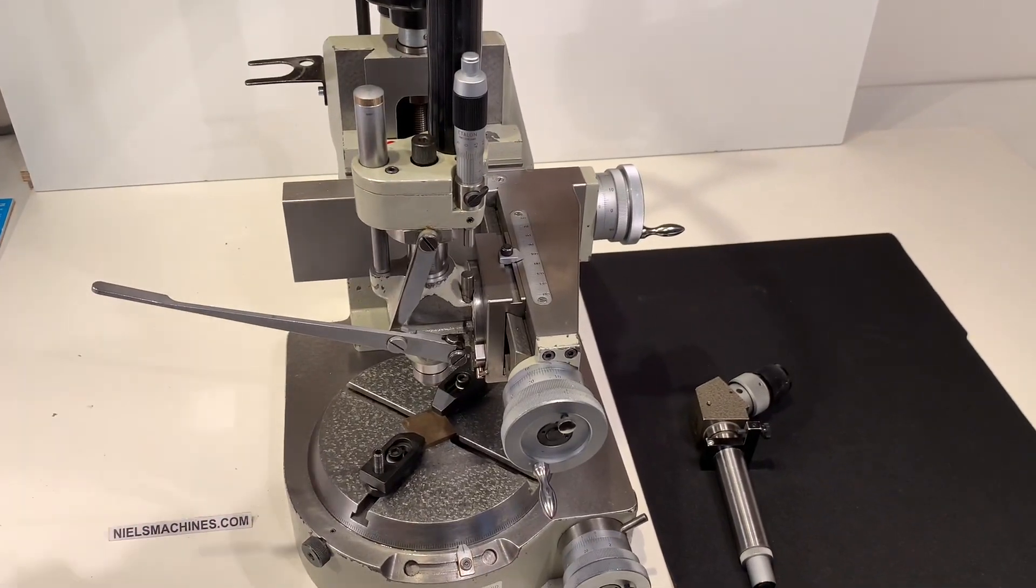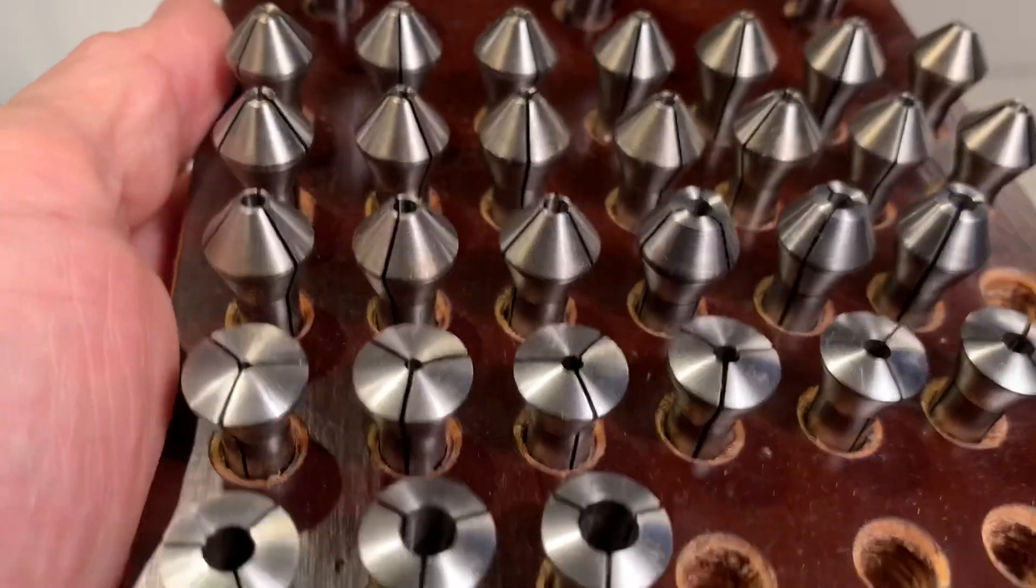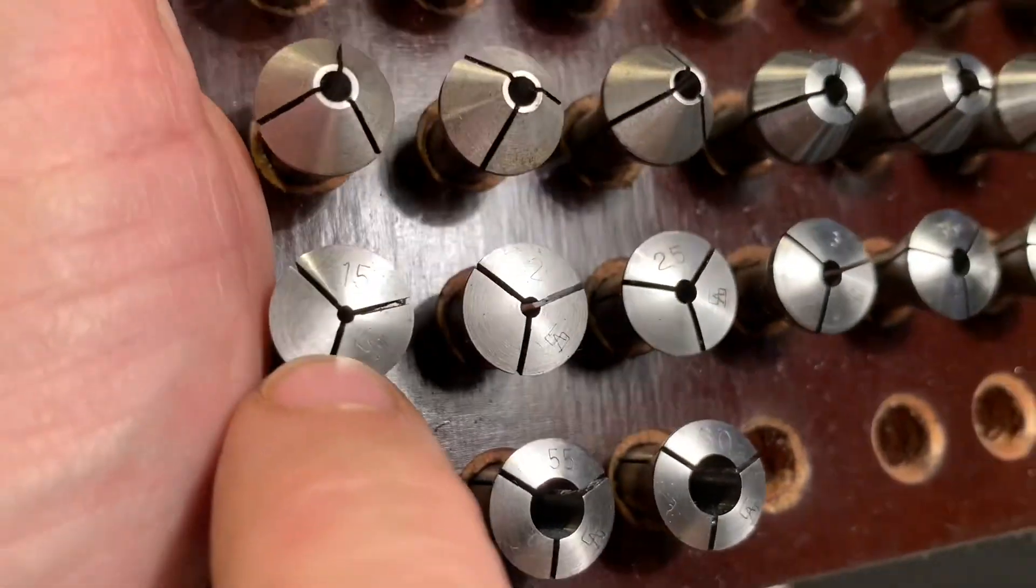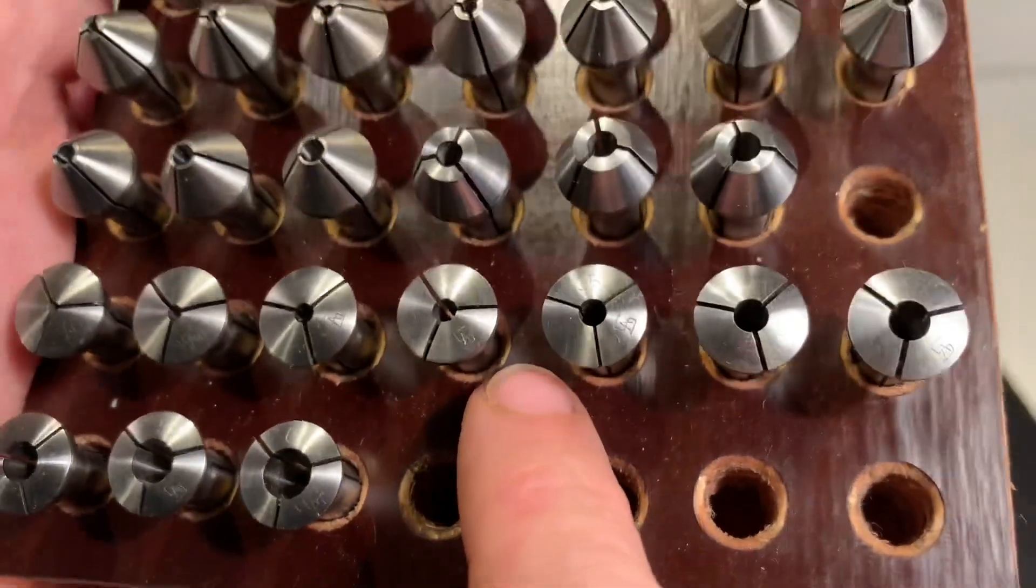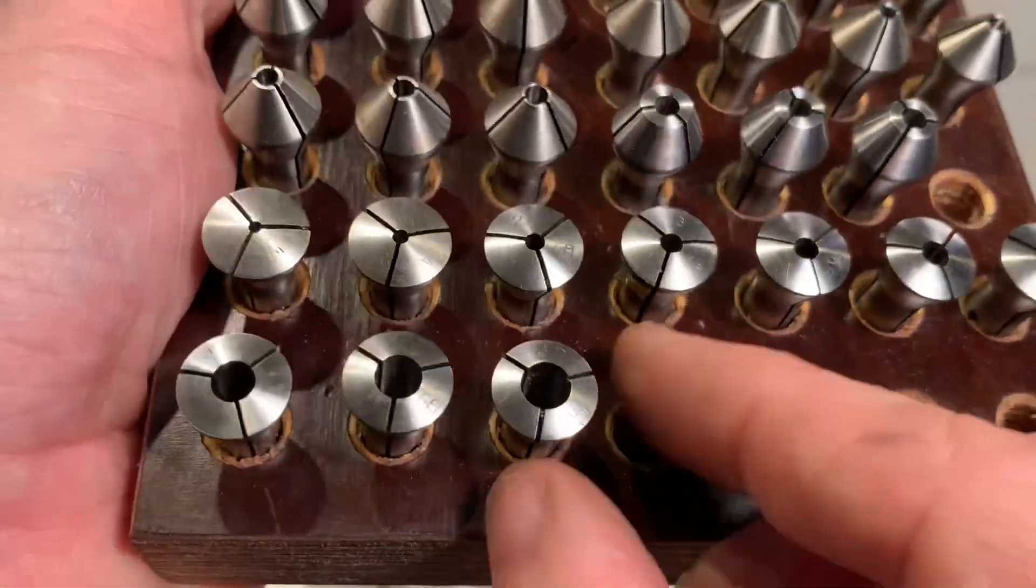With this machine, it's going to be for sale and there's some collets included. Here is a set of normal Schaublin B8 collets, the normal watchmaker collets.